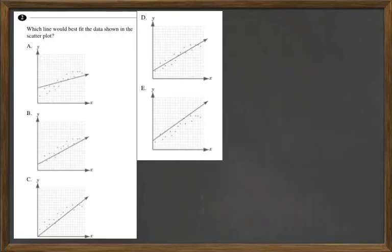For question two, which line would best fit the data shown in the scatter plot? So we're looking for the line of best fit, and for that, you want to show which way the data is trending.